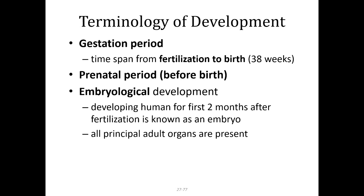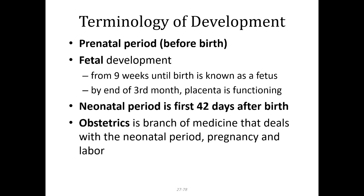Embryology is the development of that human for the first two months. We call that the embryologic development period from zygote to about the first two months — about eight to nine weeks after fertilization — known as an embryo. At the end of embryonic development, you can see all the structures that are going to become adult organs, even if they aren't quite fully developed yet. After nine weeks, from week 9 to week 38 or 40, we call that fetal development.